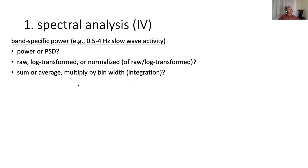Whenever we compute band specific power, for example slow wave activity or theta activity, there's many options to choose from. First, we have to decide whether we use power or PSD. Then whether we use the raw values, the log transformed values, or normalized values. And for the normalized values themselves, those can be based on the raw spectrum or an already log transformed spectrum. And then finally, when we actually want to compute the power across the band, do we sum, do we average, do we multiply by bin width? Some of these methods are probably more correct than others. At the same time, I think it's more important that you actually specify what you did.